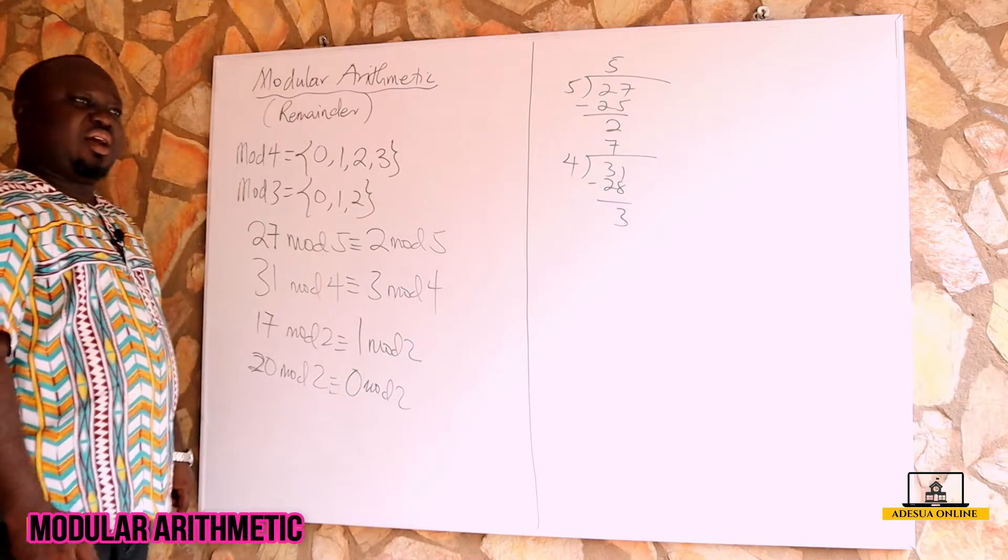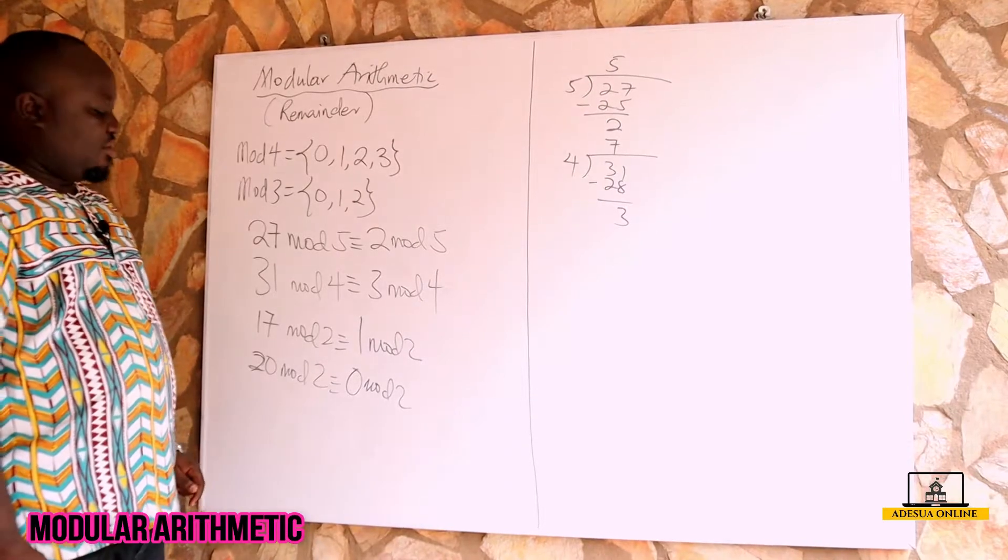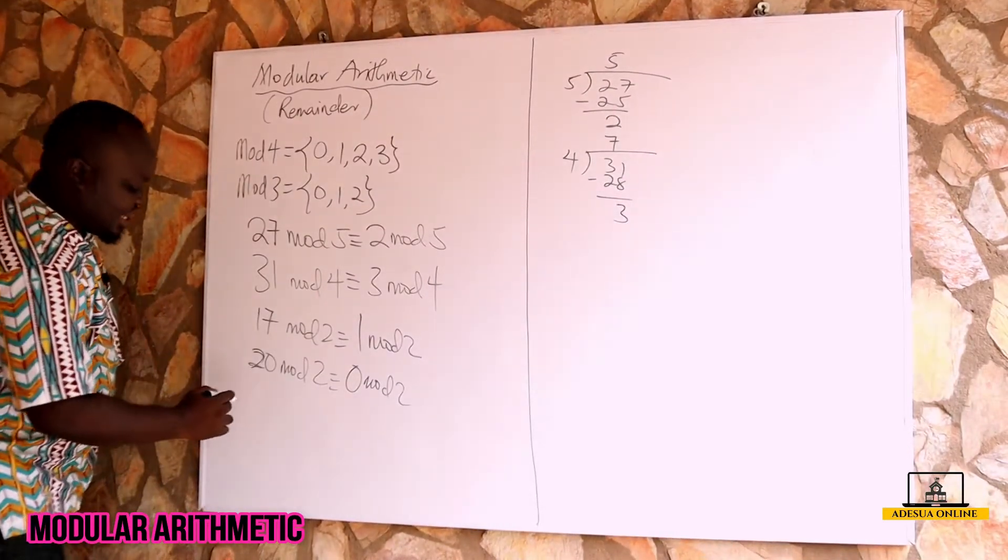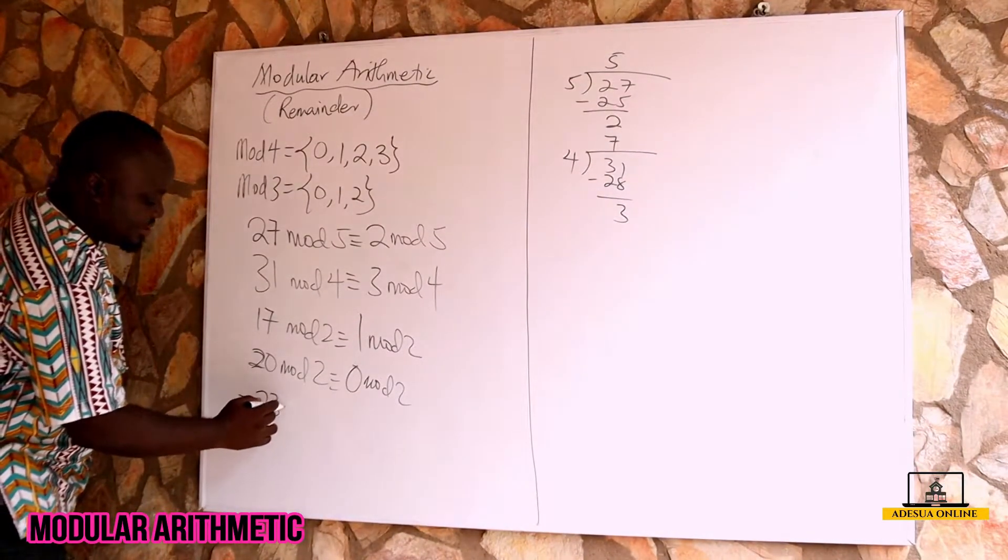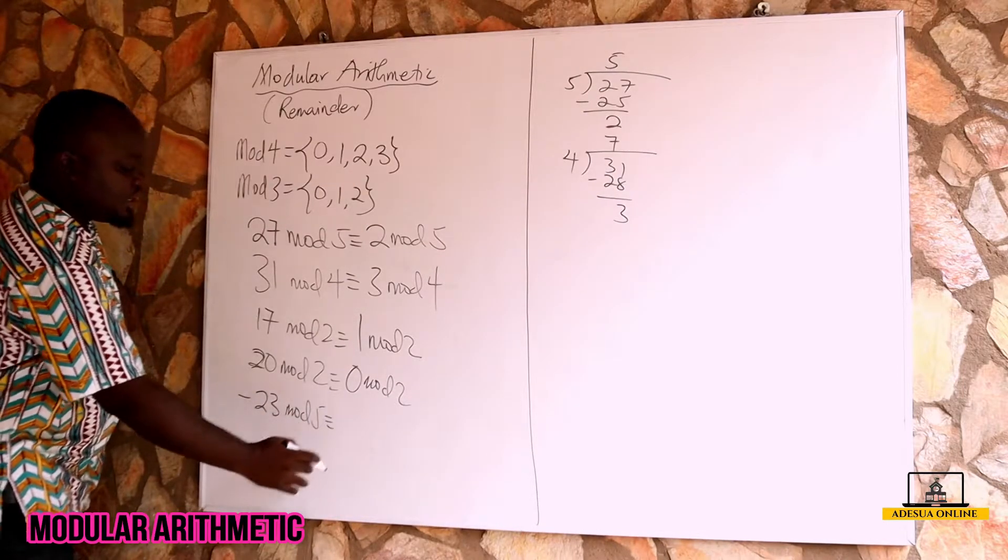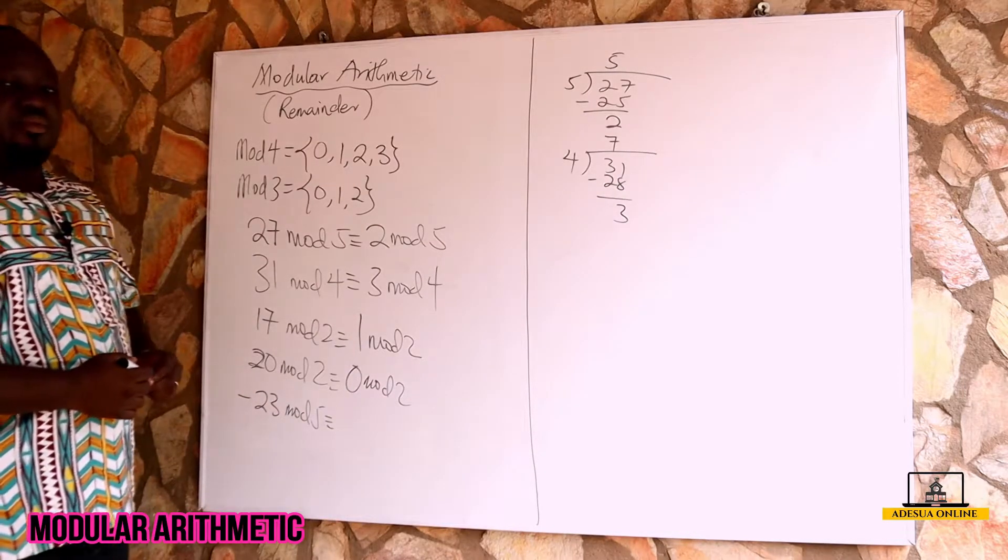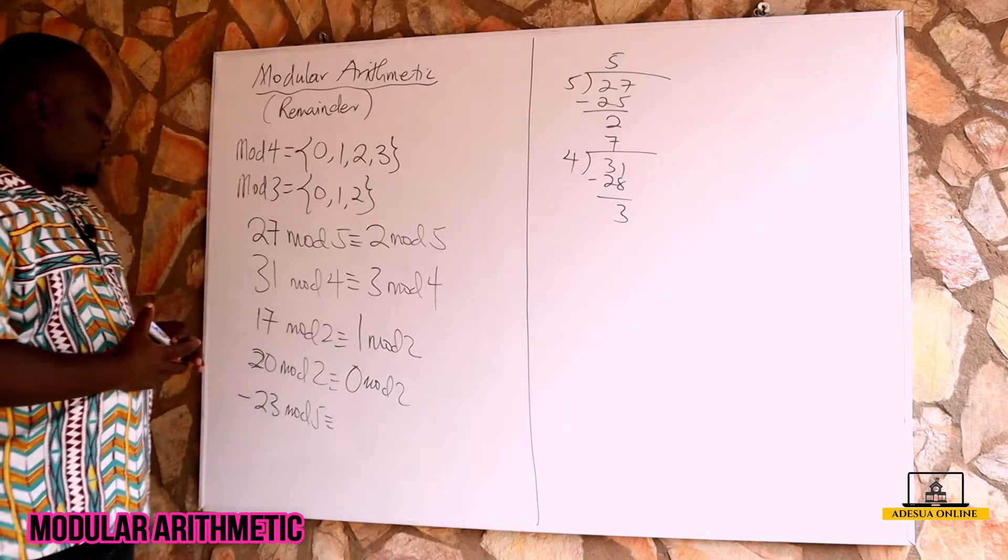Now just as we have the positive numbers, we can also have a negative number and find its modulo. Assume that I have -23 mod 5. In this case, we are going to look for multiples of 5.